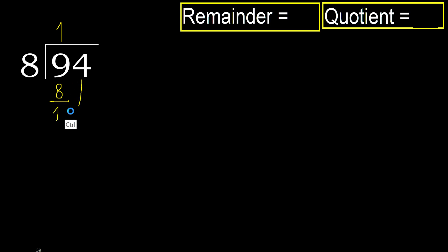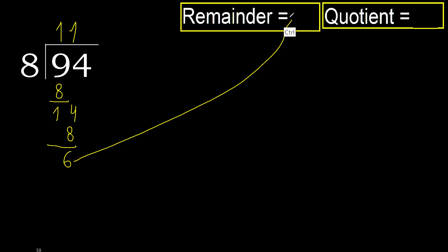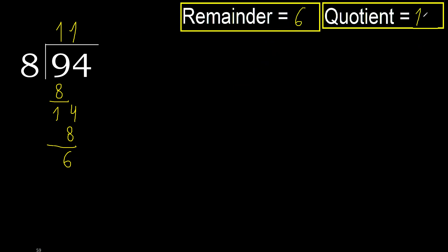Next: 14. 8 multiplied by 2 is 16, which is greater. Multiply by 1 is 8. Subtract: 6. That is not a number to continue, therefore finish it. The remainder is 6. The answer is 11.